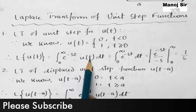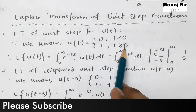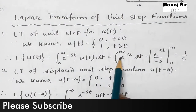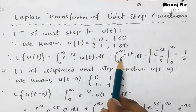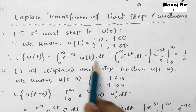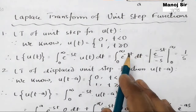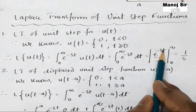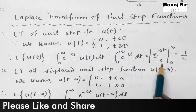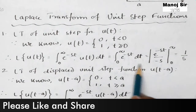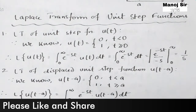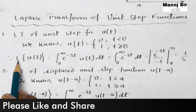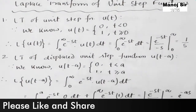Since the value of t is greater than or equal to 0 over the limit 0 to infinity, we substitute u(t) equal to 1. So the integration becomes: integral from 0 to infinity of e to the power minus s t into 1 dt. Solving this simple integration gives e to the power minus s t upon minus s, with limits 0 to infinity. Evaluating the limits, the Laplace transform of u(t) equals 1 upon s. This is a very important formula.